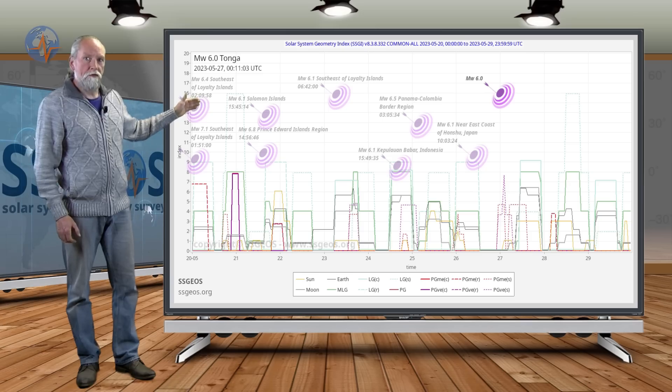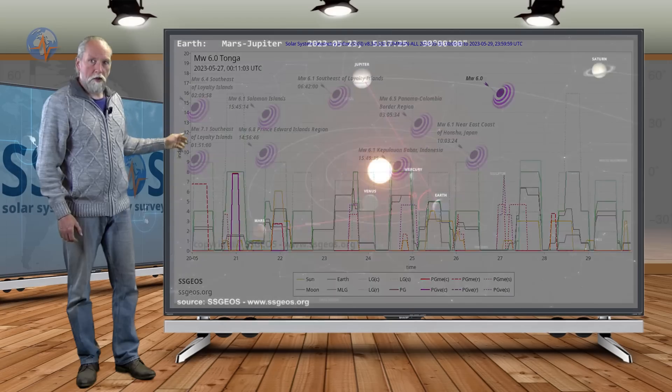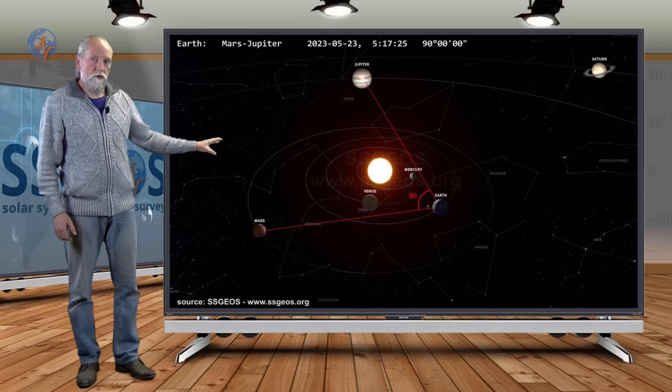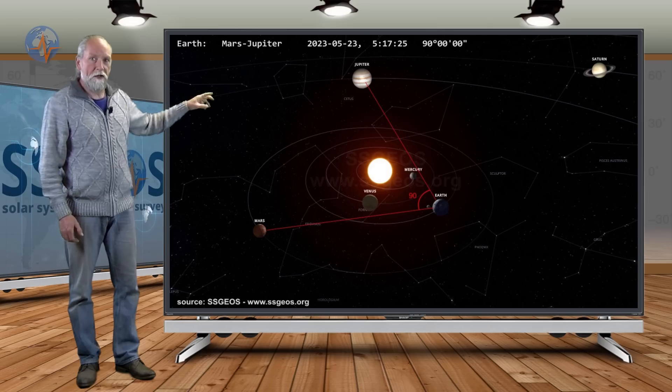This has everything to do with the geometry between Mars and Jupiter, as you can see here in the solar system relative to Earth, which allowed the moon to make critical geometry with both planets in a very short time.